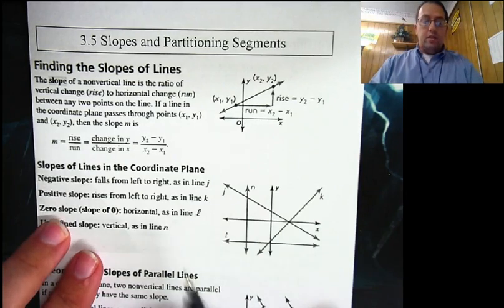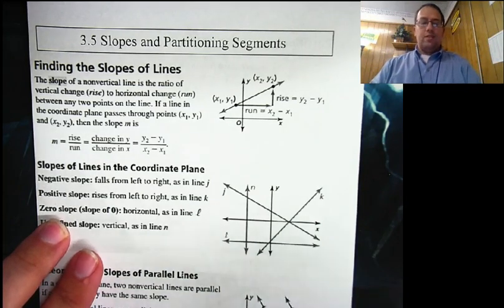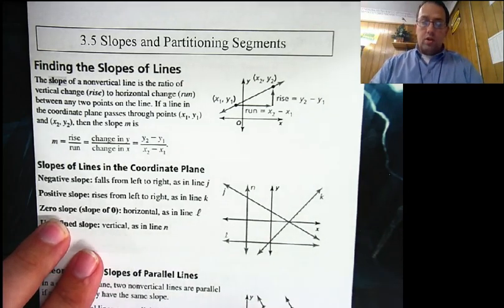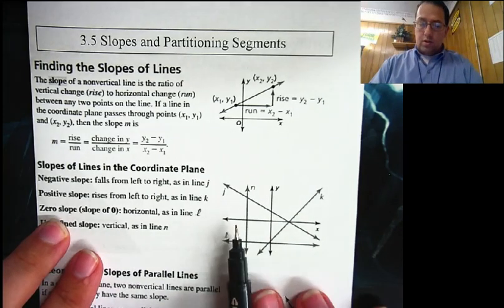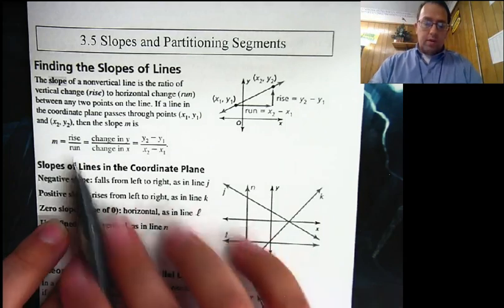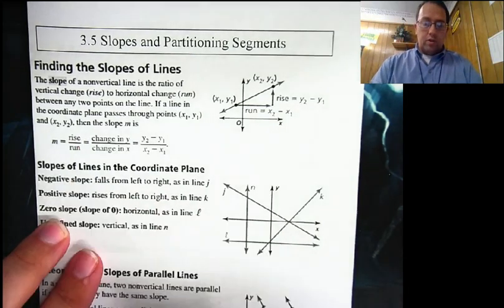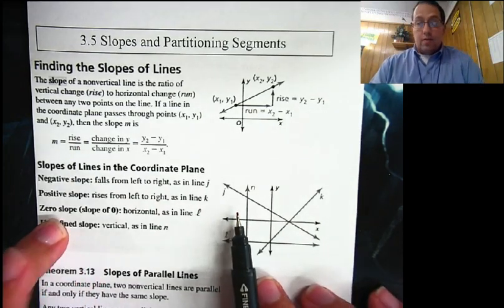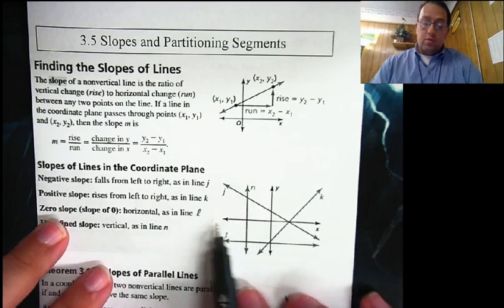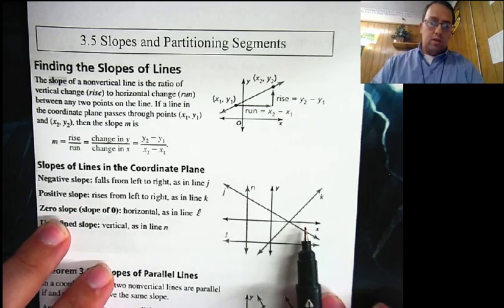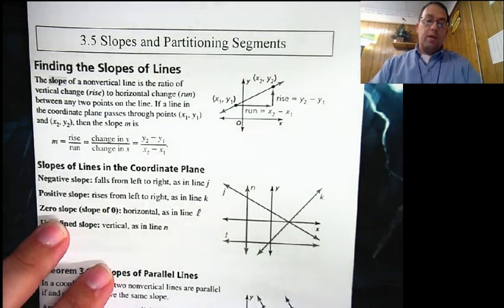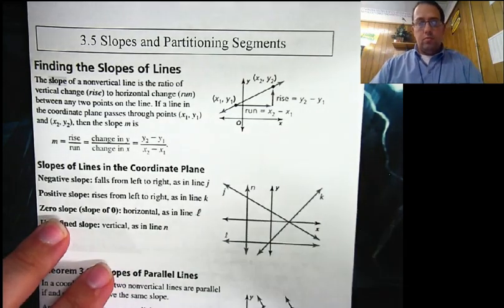Now a zero slope is not the same as no slope. A slope of zero is a horizontal line. Because rise over run — we're not going up any, we're not going down any, so zero over whatever it is — over two, over five. Zero divided by anything is zero.